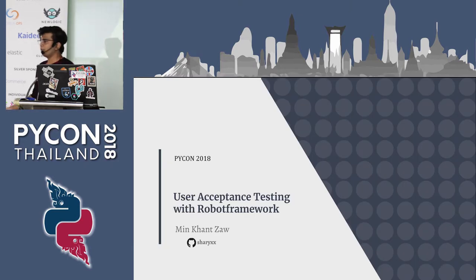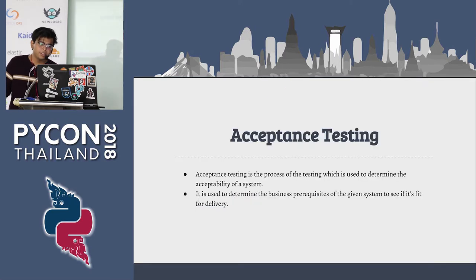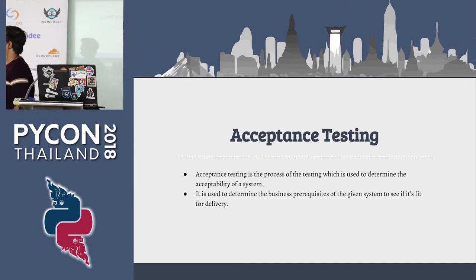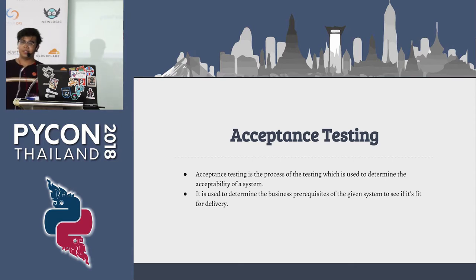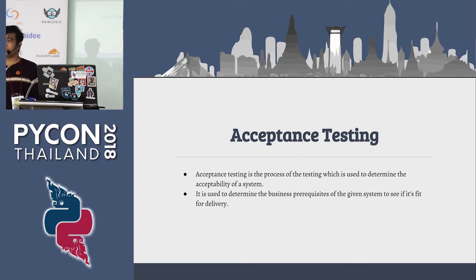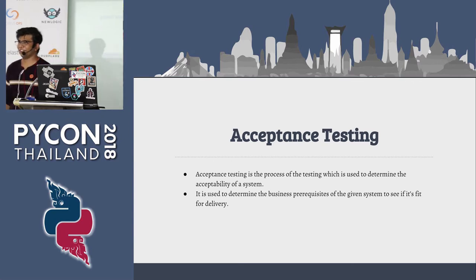Before going into Robot Framework, I'm going to talk a little bit about acceptance testing. If you've worked in production, you'd be familiar with acceptance testing. It's the process used to determine the suitability of the system before you deliver it to the customer. Something can fail and you may have to roll back, so you have to do acceptance testing or your boss will probably be unhappy.